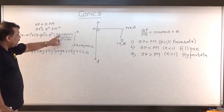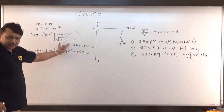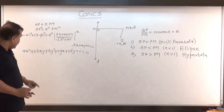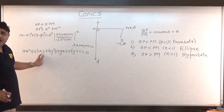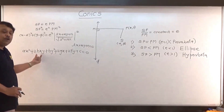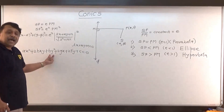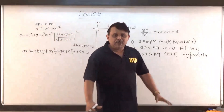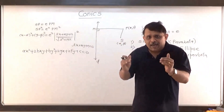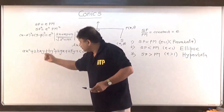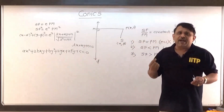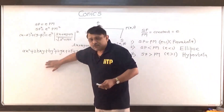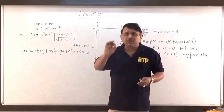Here, the x² term comes from l²x² times e² after squaring, giving some coefficient of x² which I call a. The coefficient of xy I call 2h for convenience. I get some coefficient of y², some coefficient of x, some coefficient of y, and a constant term. All such things are denoted by the letters a, 2h, b, 2g, 2f, and c conveniently, and we can write the above equation in this form, which is called the general equation of the conic.